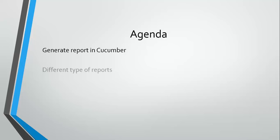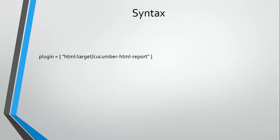You have multiple kinds of reports: you can generate a report in HTML format, JSON format, or XML format. To generate a simple plain HTML report you need to add a separate feature called 'plugin'. You have to add this inside your test runner. In the test runner, as of now we have only step definitions and glue. For HTML reporting, you specify 'html' followed by a colon and the path where exactly you want the report — in this case under the target folder — and you'll get a separate report folder called 'cucumber-html-report'.